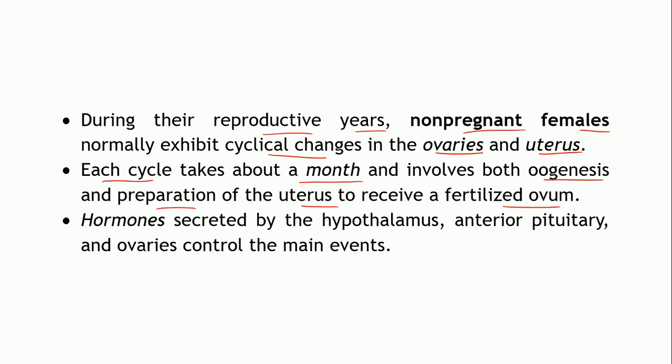All sorts of preparations will take place in the uterus to receive the ovum as if it is going to be fertilized by the sperm. Fertilization is the fusion of the male and female gamete — the penetration of the sperm into the secondary oocyte. Thinking that fertilization will take place beforehand, the uterus will start preparing itself. All these changes which are occurring in the uterus encompass sequential events and take around about one month's time to complete.